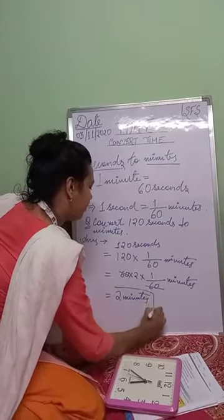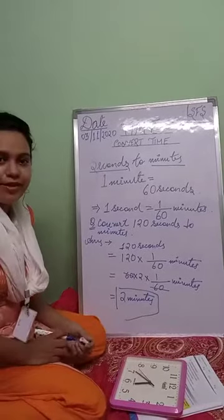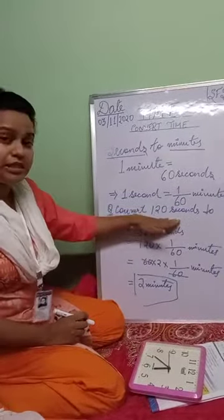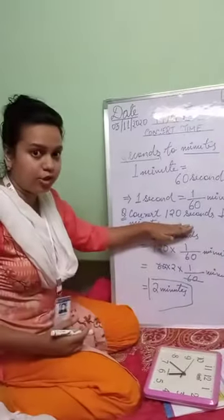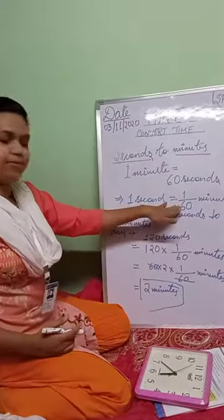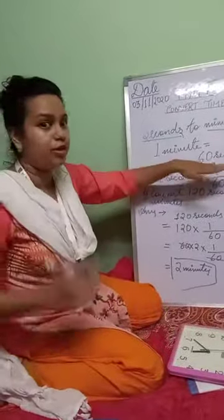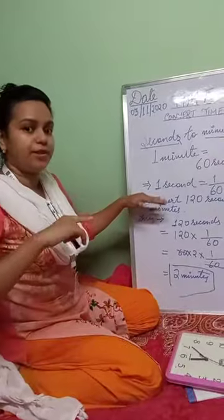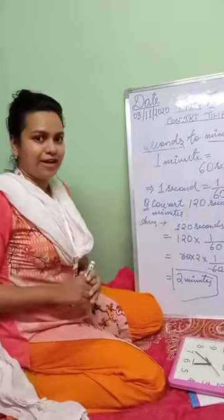So can you convert seconds into minutes now? We had one hundred and twenty seconds and converted it to minutes by dividing by sixty. Always remember: if you have to convert minutes to seconds you multiply, and if you have to convert seconds to minutes you divide.